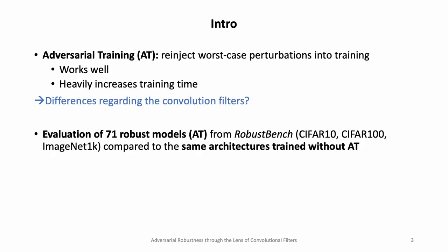A common way to mitigate this issue — a defense against it — is to perform adversarial training, which means that during training of your model, you find the worst-case perturbation that fools your network and reinject it into the training data. So effectively, you synthetically generate worst-case images and tell your model it did badly on that image and to relearn it. This works very well, but you suddenly have much more data, and finding these worst-case perturbations is also very costly, so adversarial training heavily increases your training time.